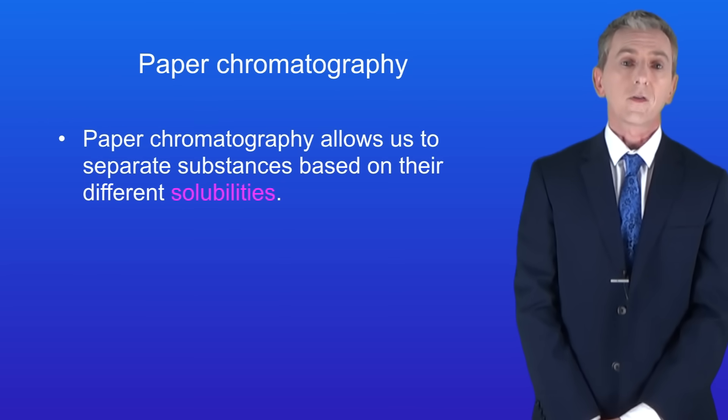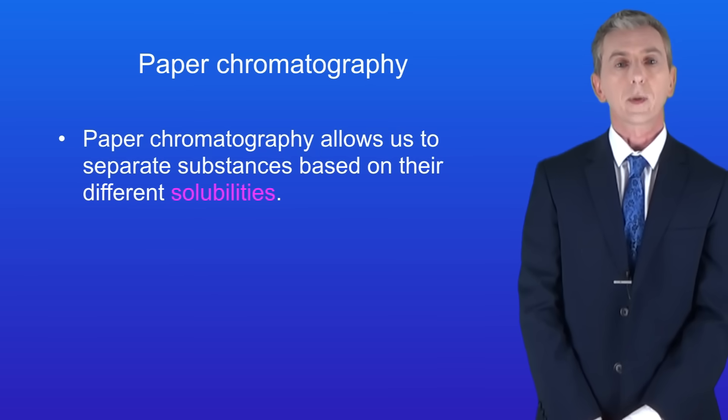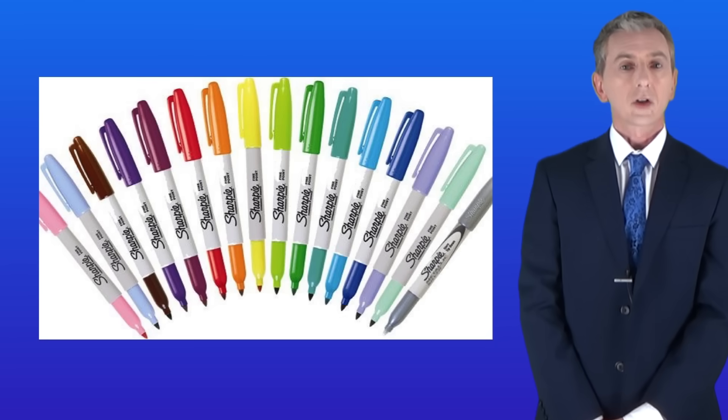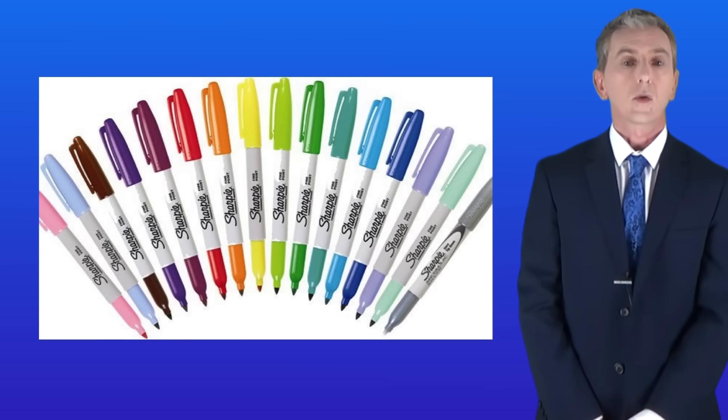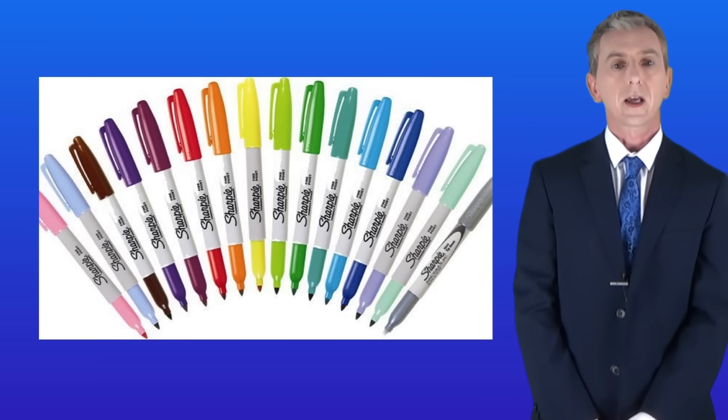Paper chromatography allows us to separate substances based on their different solubilities. So let's look at an example. Imagine I have a collection of colored pens such as these. I want to know which pens contain only one color and which pens contain a mixture of colors.